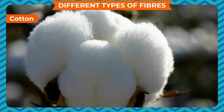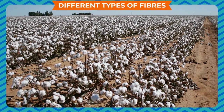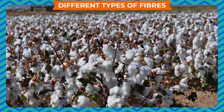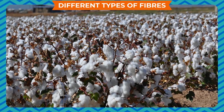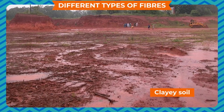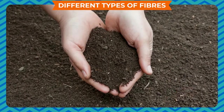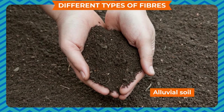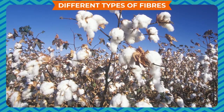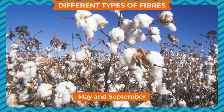Different types of fibers — cotton: cotton is a soft fiber that grows around the seeds of the cotton plant; it is called cotton balls. Cotton is a warm season crop requiring moderate rainfall. It needs fertile clay soil with good moisture-holding capacity. Black soil found in western and southern India and alluvial soil of northern India are suitable for growing cotton.